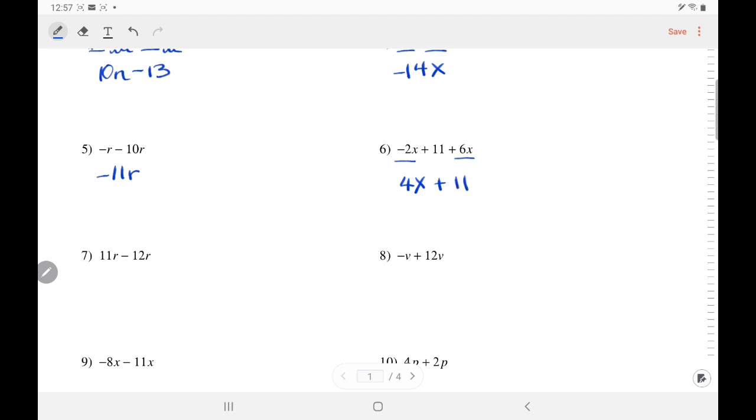11 minus 12, it's like 11 plus negative 12. Use the rule of adding opposites. Subtract, 12 minus 11 is 1. Take the sign of the stronger number, which is 12, and it's a negative. So, negative 1r, or just negative r.